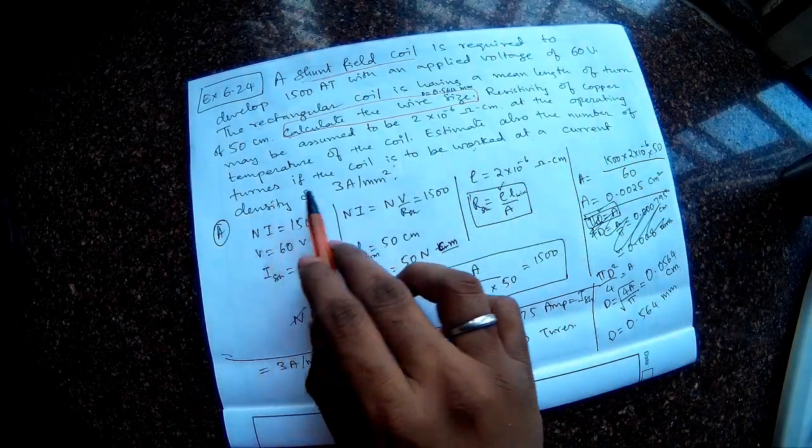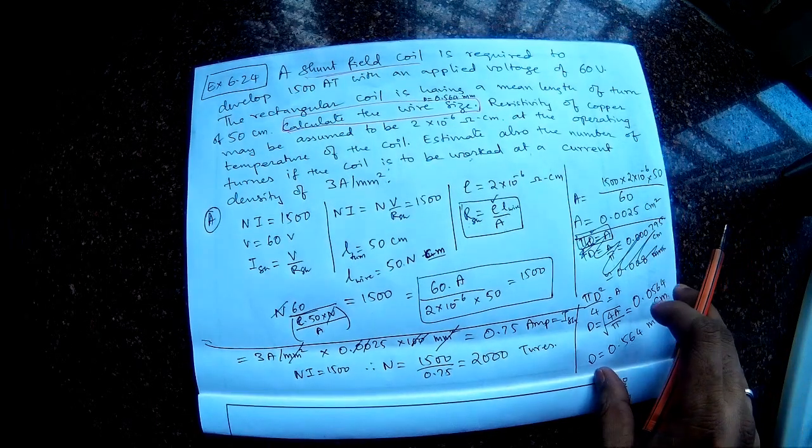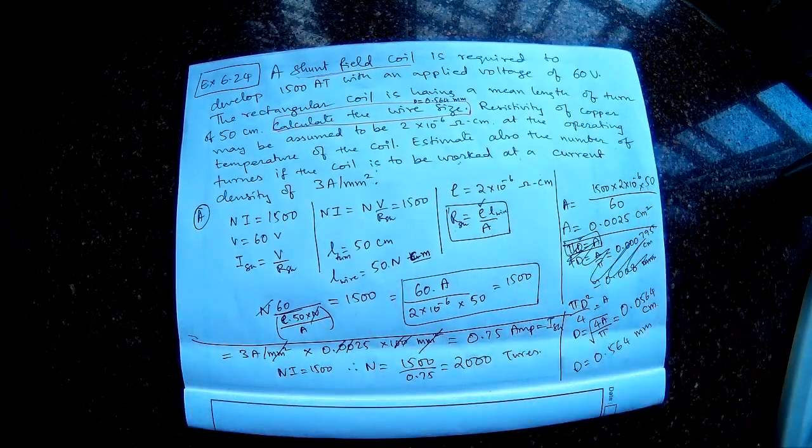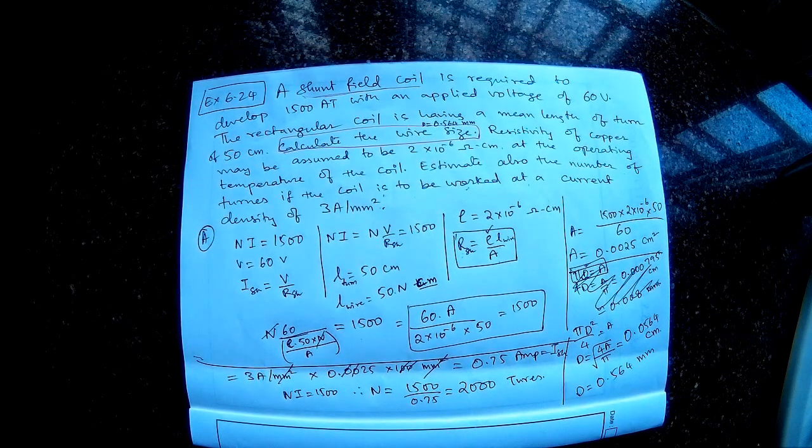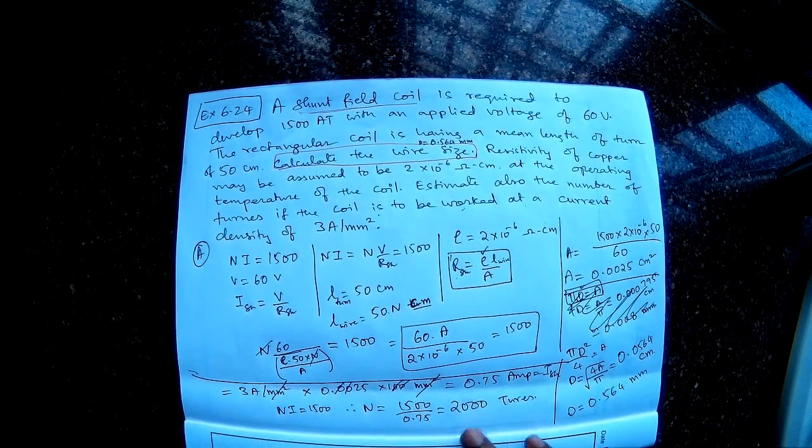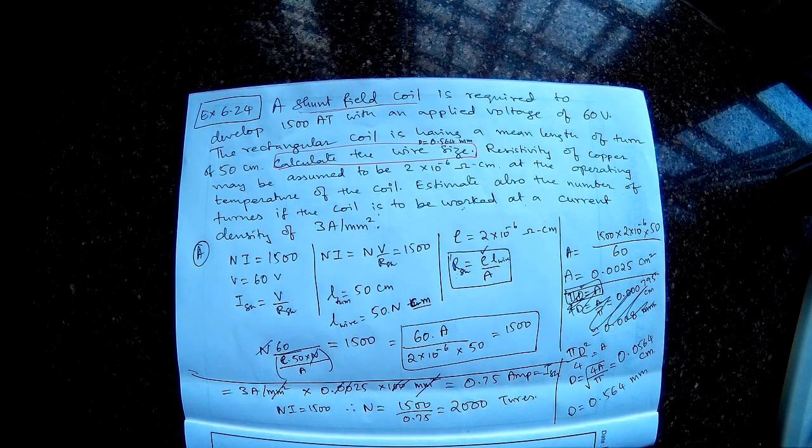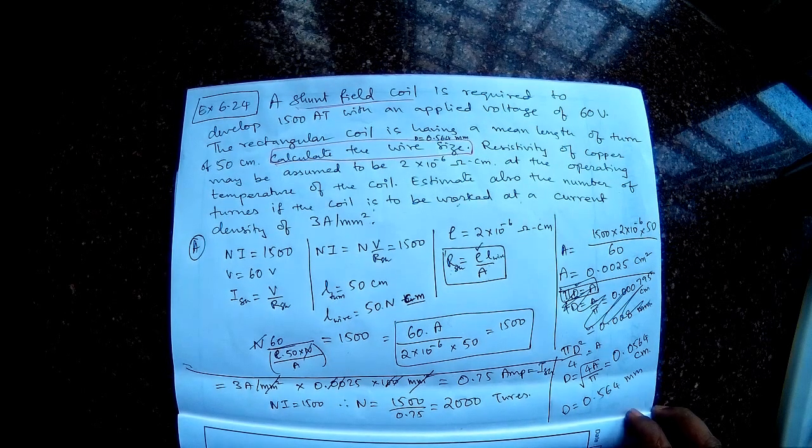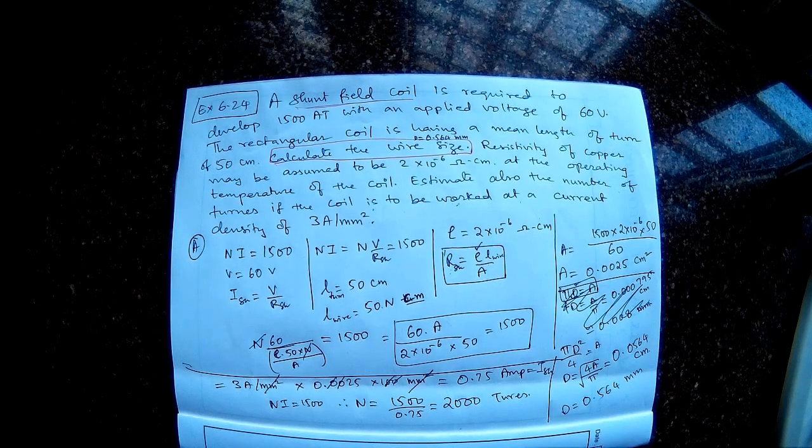So estimate the number of turns of the coil to be worked at a current density of 3 amperes per mm square. So this is how we solve the problem. This is incorporating both electrical and magnetic circuits knowledge. Slightly complicated problem I feel, but then if you really understand what is going on, it is not that complicated. I hope you learned something from solving this problem. See you in the other videos for more questions.